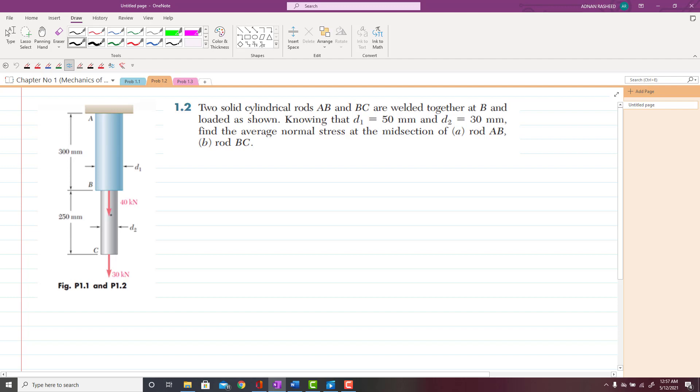So this is rod AB and this is rod BC, and they are welded together at this point B. This is shown in the figure. The diameter of rod AB, D1, is given as 50 mm, and the diameter of rod BC, D2, is given as 30 mm.